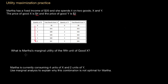The first question is: what is Martha's marginal utility of the fifth unit of good X? We don't have a marginal utility column on this table, so we can add one. The first unit of good X provides Martha with 16 utils, the second unit provides an additional 12 utils, and the fifth unit of good X increases her total utility by only 1 util. So the answer is 1 util. Remember, marginal utility equals the change in total utility divided by the change in quantity. As quantity increased from 4 to 5, total utility increased by 1 util, giving Martha a marginal utility of 1 util for the fifth unit.